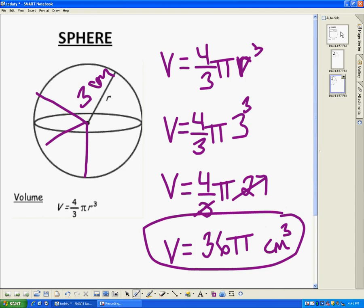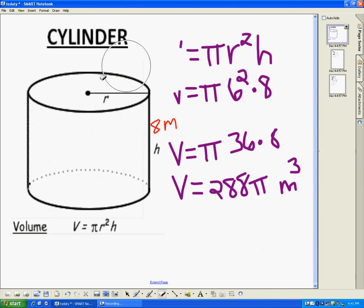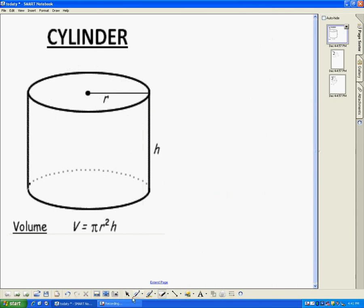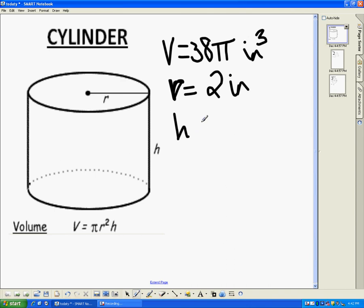Now, there are going to be times where you may know the volume and the radius and may be asked to find the height. So, for example, let's say that the volume is 38 pi cubic inches, and the radius is 2 inches. My question would be, what is the height? Well, we're going to plug in what we know and then figure out what we don't know. So, volume of a cylinder is pi r squared h. So I'm going to plug in my volume, which is 38 pi. That's equal to pi. My radius is 2, so it's going to be 2 squared times my height.